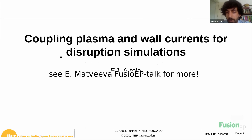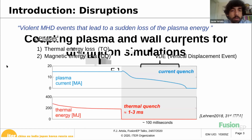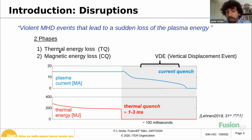Before anything, let's give an overview on disruptions. For those of you not familiar with disruptions, let me introduce them. Disruptions are violent events that lead to a sudden loss of plasma energy. They consist of two phases: the thermal energy loss, which we call the thermal quench, and the magnetic energy loss, which we call the current quench. In these two plots you can see an example of a disruption for ITER — in blue is the plasma current and in red the thermal energy.